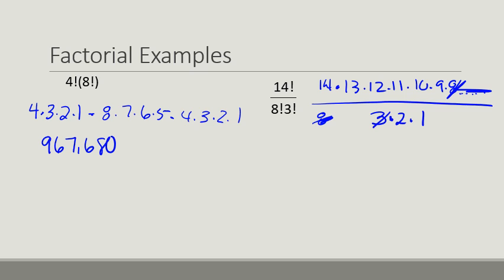Well, 3 goes into 9 three times, and then 2 goes into 10 five times. So I can just multiply that out. And I don't have anything left in the denominator. So I do 14 times 13 times 12 times 11 times 5 times 3, and that gives me 360,360.